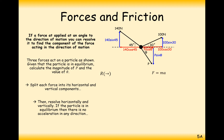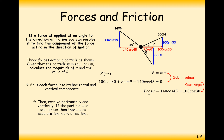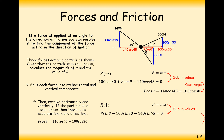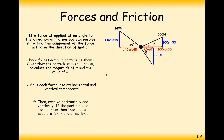We set leftward forces equal to rightward forces. Setting rightward forces as positive: 100 cos 30 + P cos θ − 100 cos 45 = 0, which we rearrange to make P cos θ the subject. Then resolving vertically, the two upward forces must balance the downward force. This gives a second equation: P sin θ equals a calculated value.